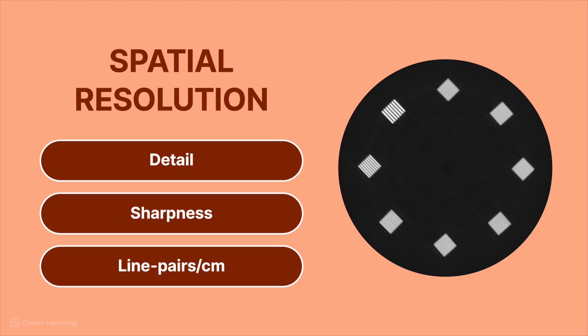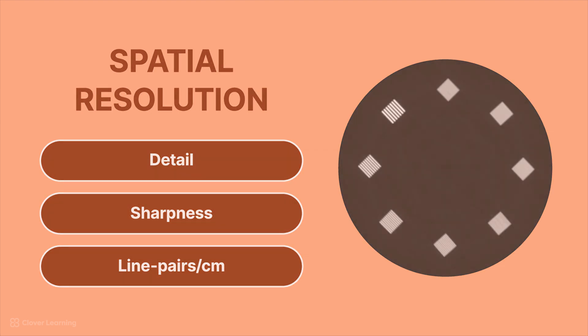Each cube in the line pairs phantom represents an increasing number of line pairs, and as there's more line pairs, they get smaller and the spaces between them get smaller. The highest number of line pairs that can be visualized represents the spatial resolution of the CT system. Spatial resolution will be measured in line pairs per centimeter or sometimes in line pairs per millimeter.